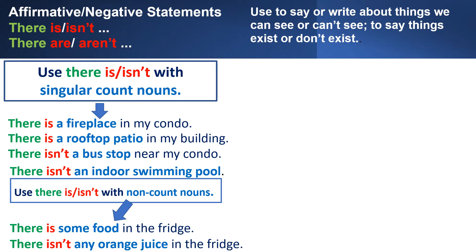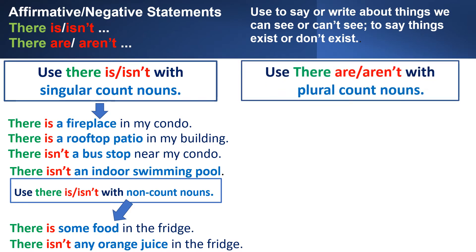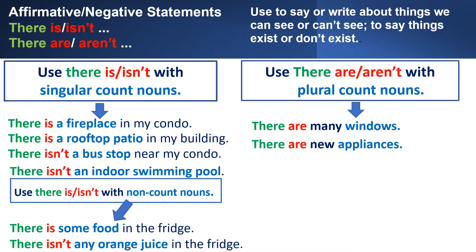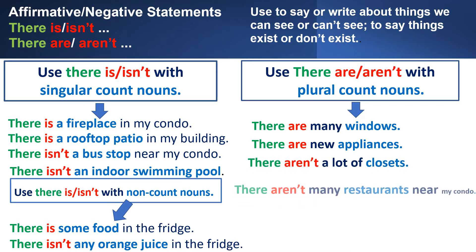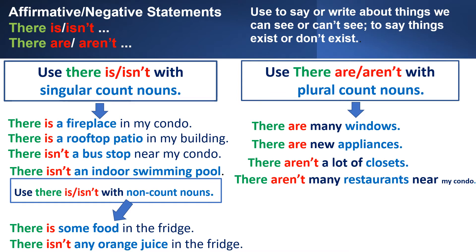With plural count nouns — plural means two or more — we use there are or there aren't. There aren't many windows in my condo. There are new appliances. There aren't a lot of closets. There aren't many restaurants near my condo. Windows, appliances, closets, and restaurants are all plural count nouns, so we use there are or there aren't.